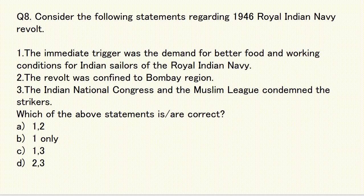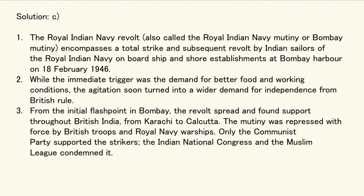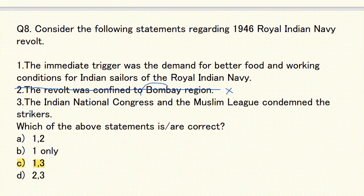Question number 8: Consider the following statements regarding the 1946 Royal Indian Navy revolt — the immediate trigger was the demand for better food and working conditions for Indian sailors; the revolt was confined to the Bombay region; Indian National Congress and Muslim League condemned the strikers. The correct answer is C — statements 1 and 3 are correct; statement 2 is incorrect. The Royal Indian Navy revolt, also known as the Bombay Mutiny, was a flashpoint in Bombay but it spread throughout British India from Karachi to Calcutta — so it was not limited to the Bombay region.